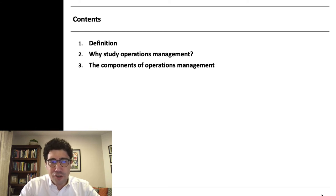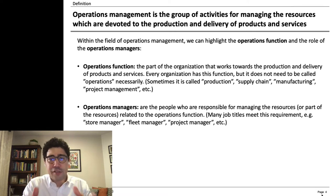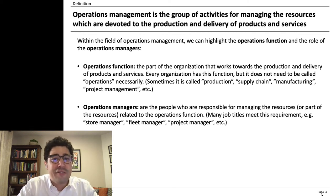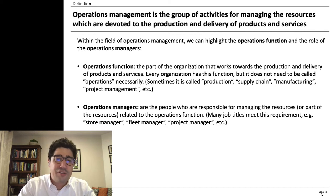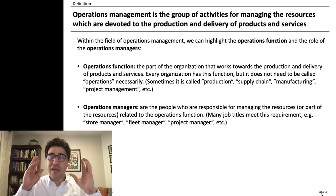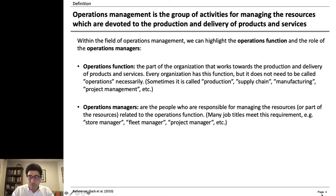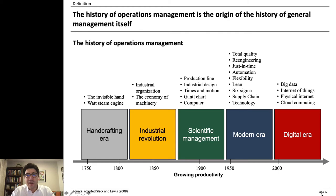Let's get started with its definition. Operations management is the function that makes the products and services of a company. All the activities related to providing the production and delivery of products and services are within the operations function. Sometimes the operations function is called production, supply chain, manufacturing, or project management. It has many different names, but basically you have to think about everything that makes the products and services to be provided and delivered to the customer. And the history of operations management is the history of general management itself.